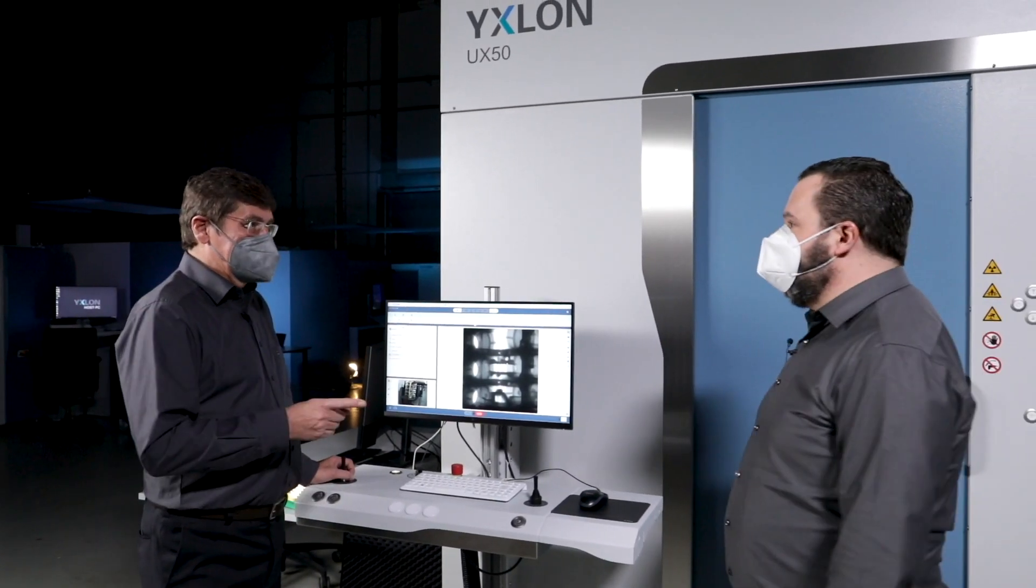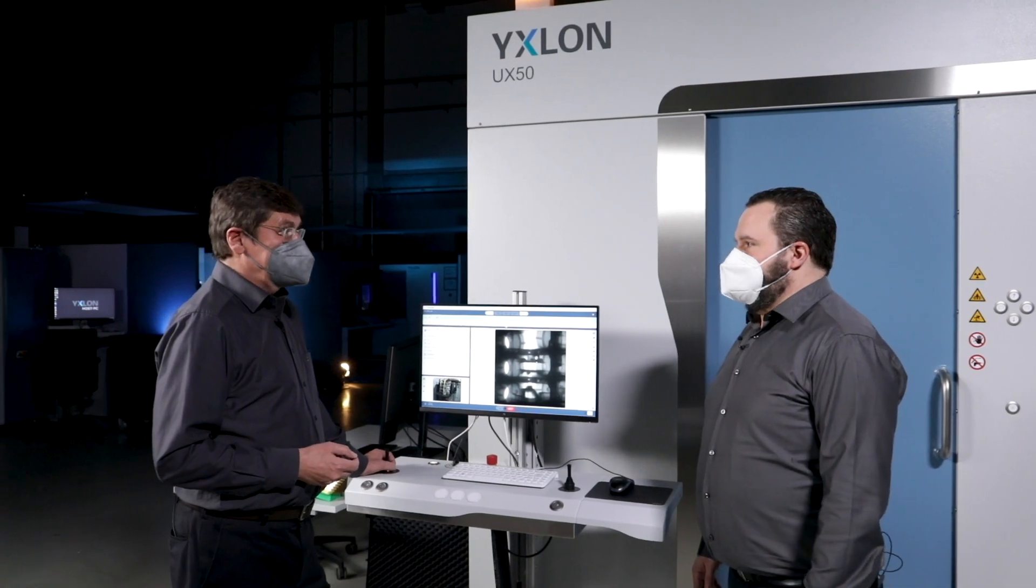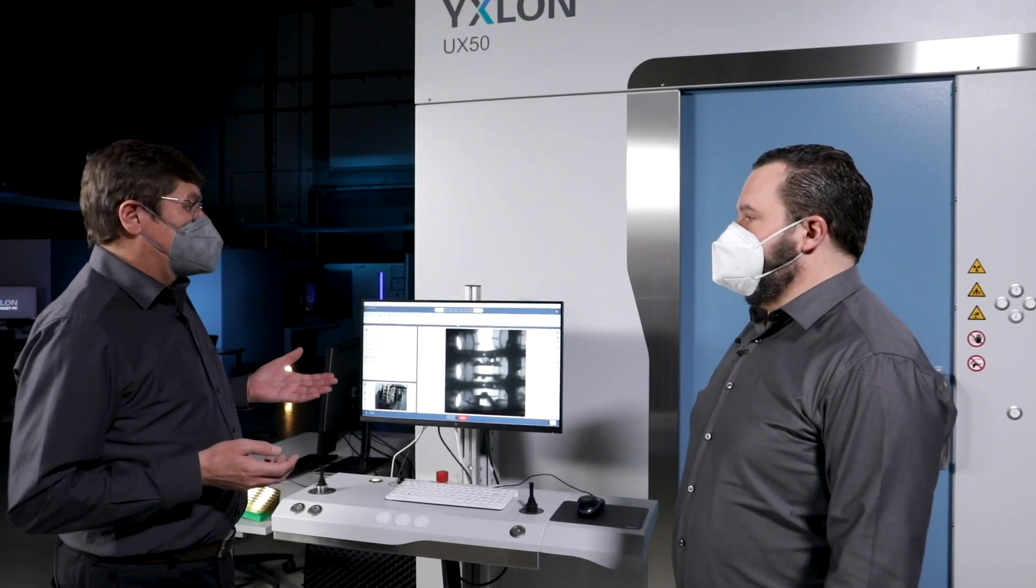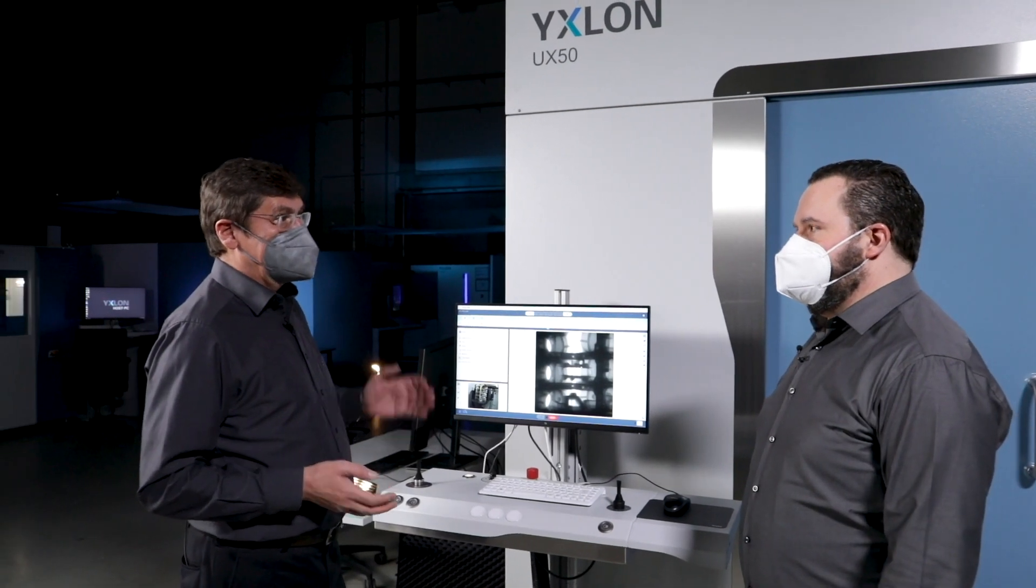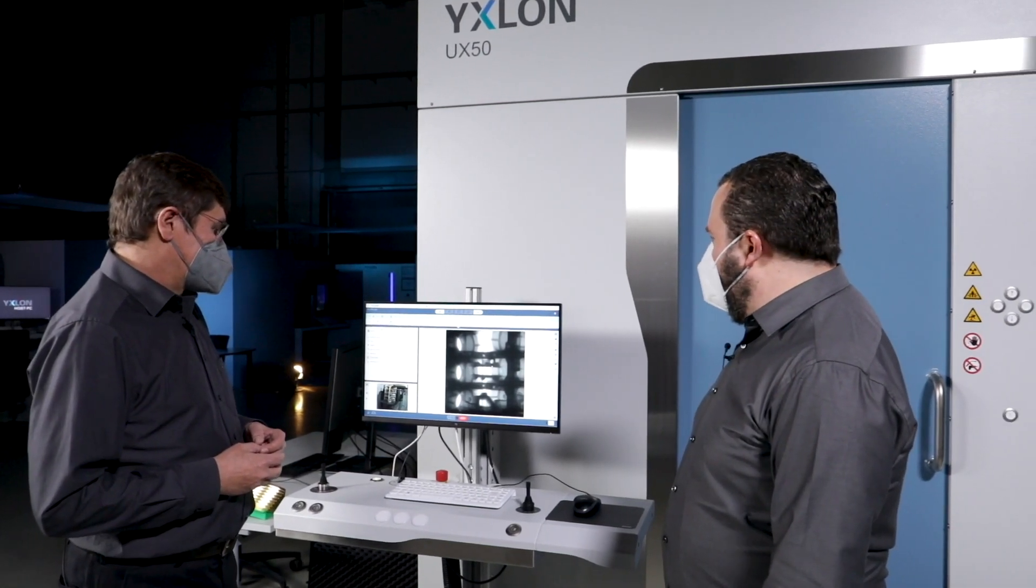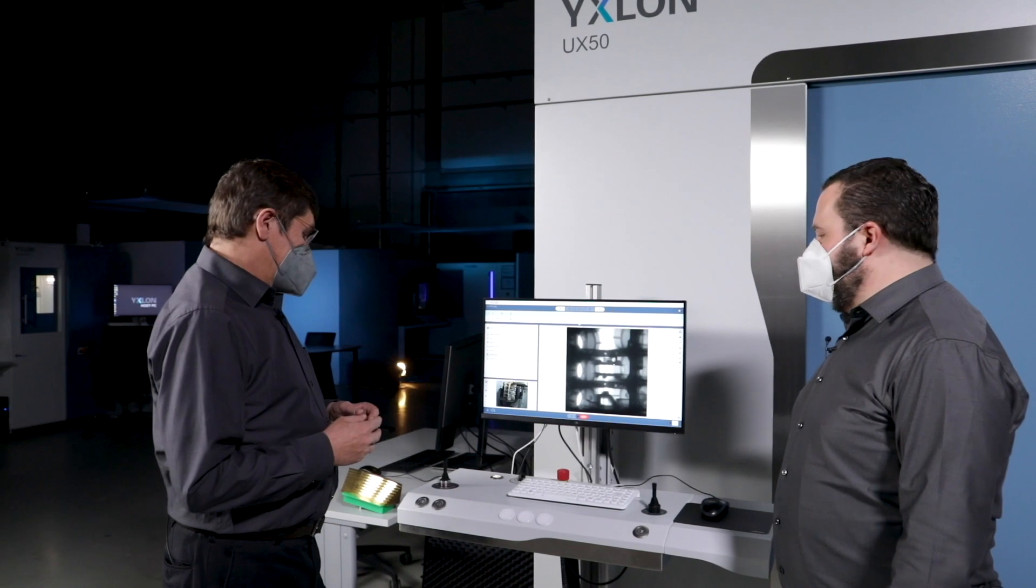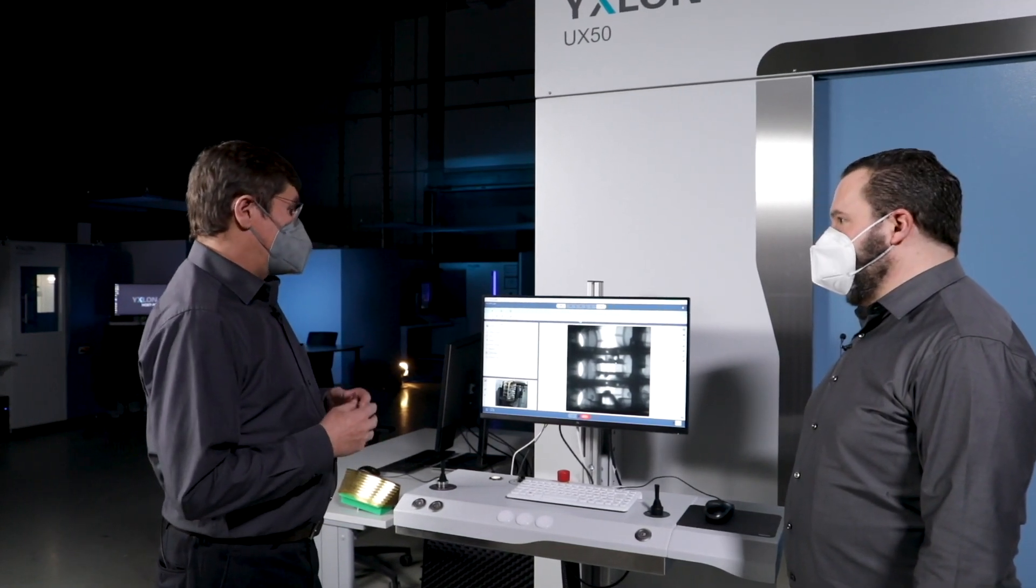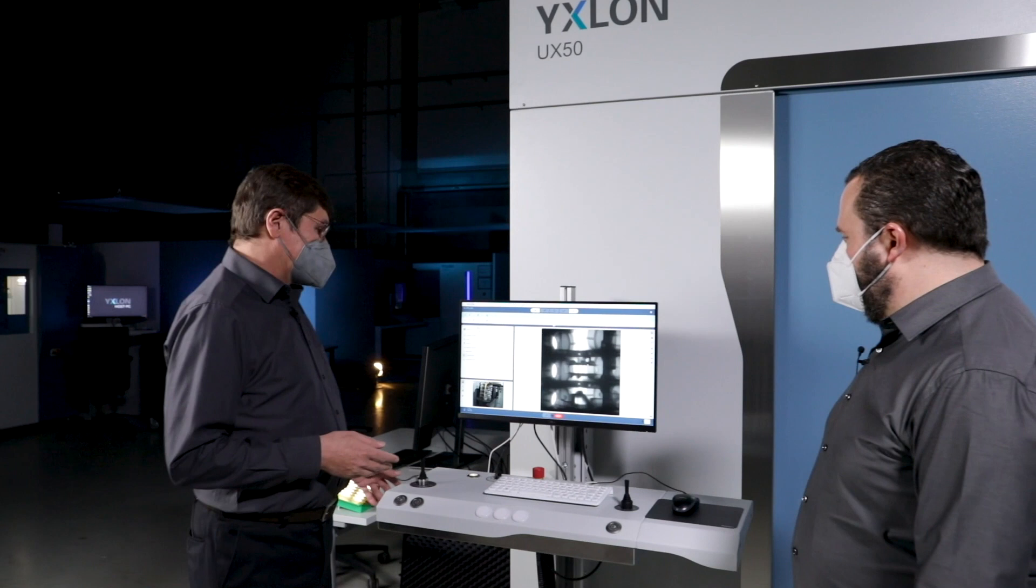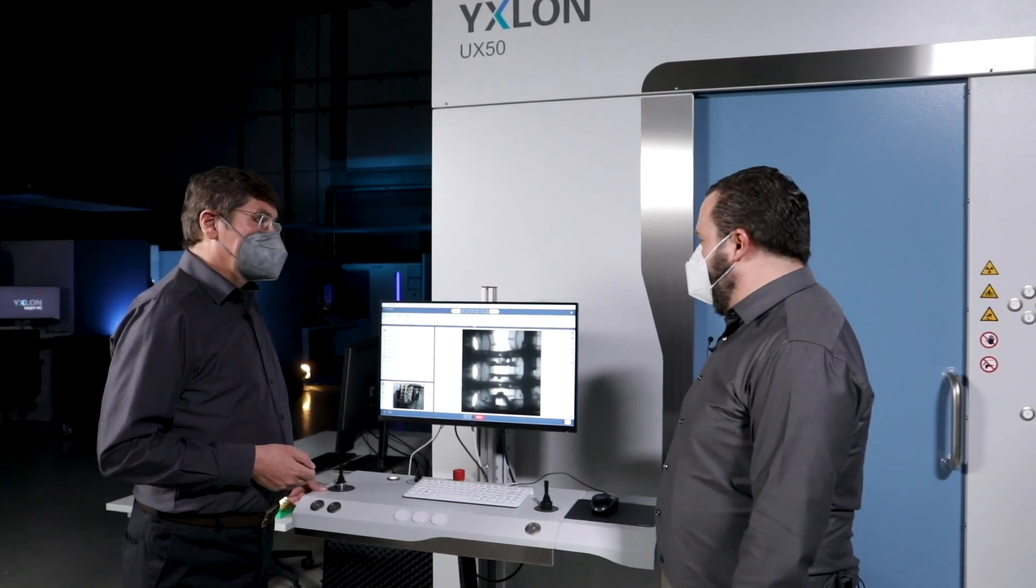As you can see, it's very compact. Despite a large and high energy 450 kV tube, an integrated control cabinet, it offers a maximum part size of a diameter of 600 millimeters and a height of 800 millimeters. And this is the control panel of Gemini, as we know it from the UX20 already. Of course, it's height adjustable in a very wide range.